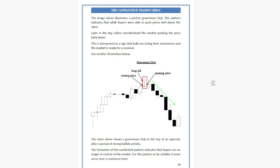The chart shows a Gravestone Doji at the top of an uptrend after a period of strong bullish activity. The formation of this candlestick pattern indicates that buyers are no longer in control of the market. For this pattern to be reliable, it must occur near a resistance level.